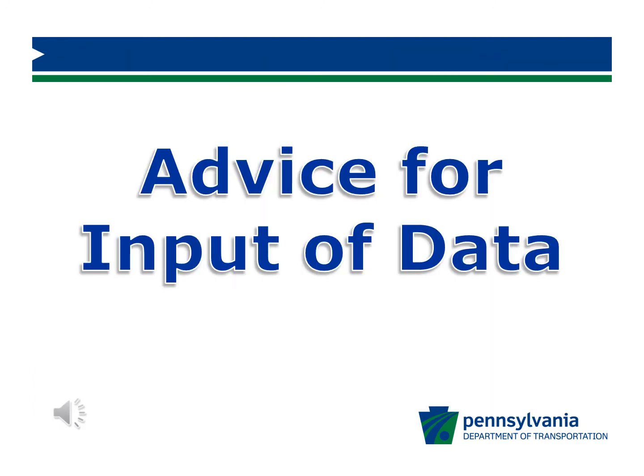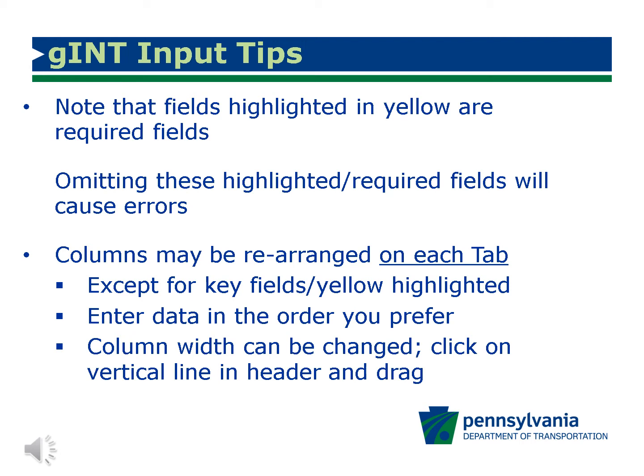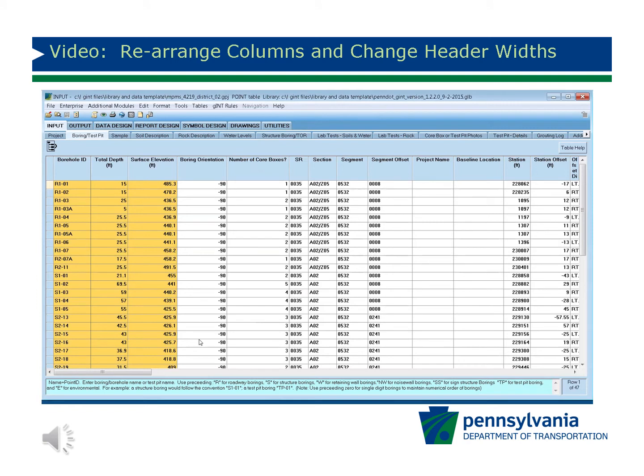Here are some input tips for Gint project files. Fields highlighted in yellow are required fields; Gint will not continue unless the data is included, and the user will receive an error notification and be prompted to enter the data. Users can rearrange columns on each tab except for the key fields highlighted in yellow. Columns on the Project, Boring Test Pit, Sample Tab, and others can be moved so that the user can enter data in any preferred order. The width of columns on each tab can be changed by clicking and dragging the vertical line in the column header.